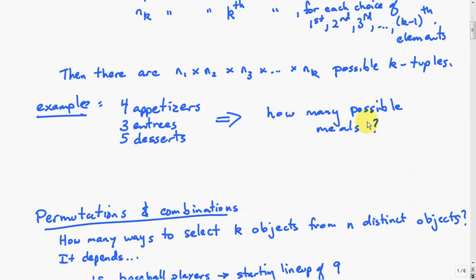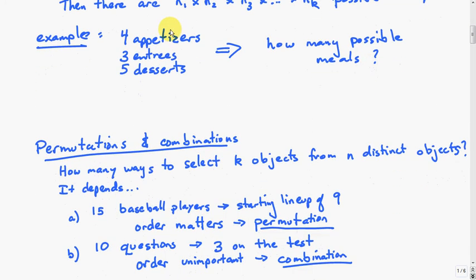Let's look at a simple example. Suppose you're at a restaurant and they have four appetizers, three entrees, and five desserts. How many possible meals, assuming you choose one of each? That would be 4 times 3 times 5, which equals 60 choices in all. The choices don't depend on each other, so that's the basic way you use the product rule.